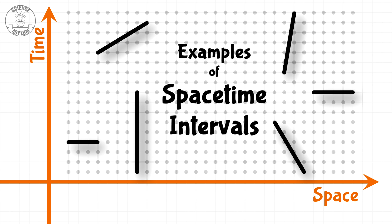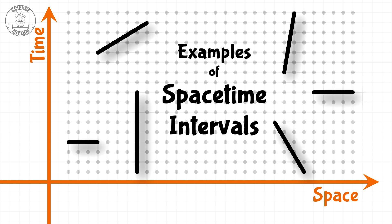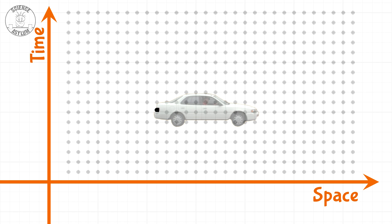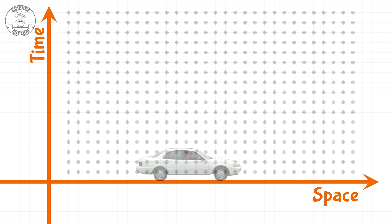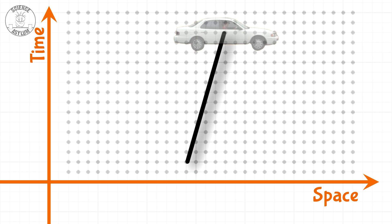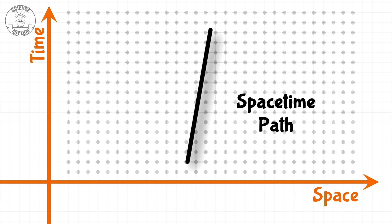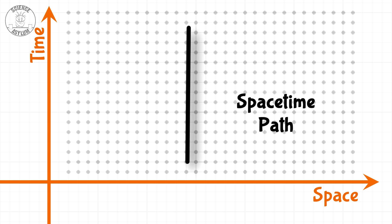A space-time interval is what you get when you connect two events. All the events between the front and the back of the car we call its length. All the events between when this car starts and when it stops we call its space-time path. How slanted that path is depends on speed.